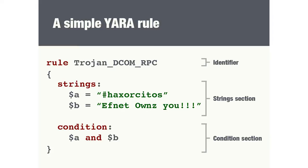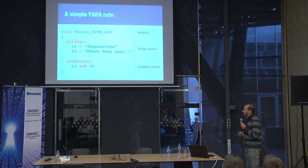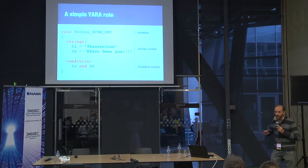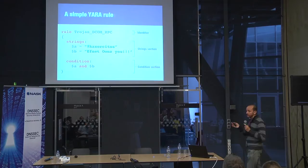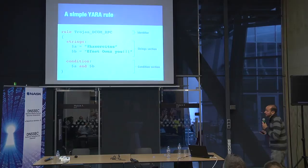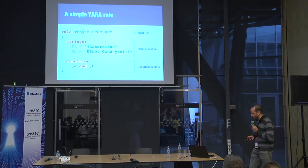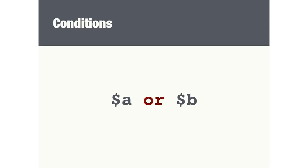This is a very simple YARA rule composed of two strings. As you can see, the rule has an identifier — in this case, Trojan_DCOM_RPC — a strings section, and a condition section. The strings section is where you put the strings or patterns to be searched in your files. The condition section is where you put the logic for your rule. This particular rule tries to find files containing both strings, because the condition is A and B. The condition could also be A or B, or A and not B, or A and B or C.